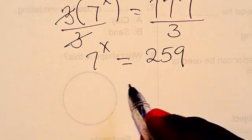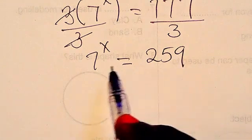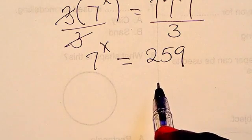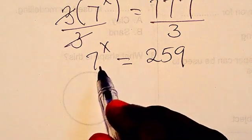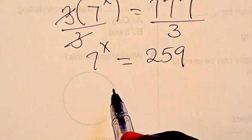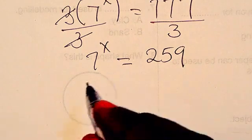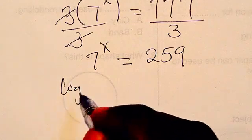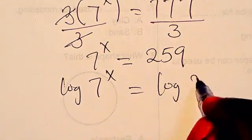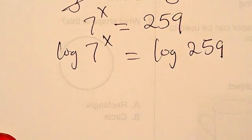Right, so from there the next thing we are going to do is introduce log to both sides. You can use log of any number with respect to any base. So now from here I will use log 7^x equals log 259. That is with respect to base 10.